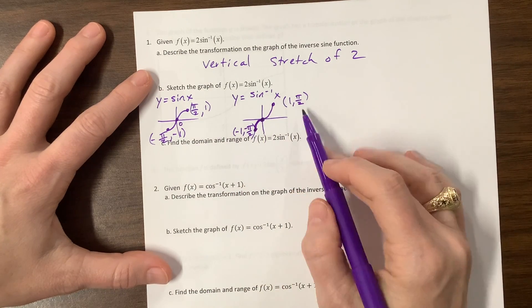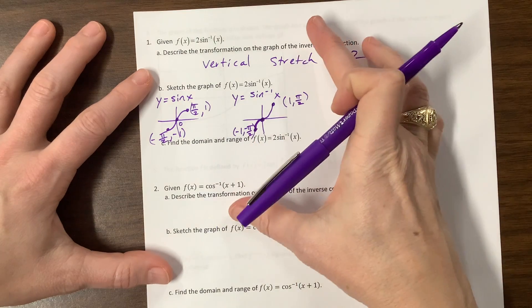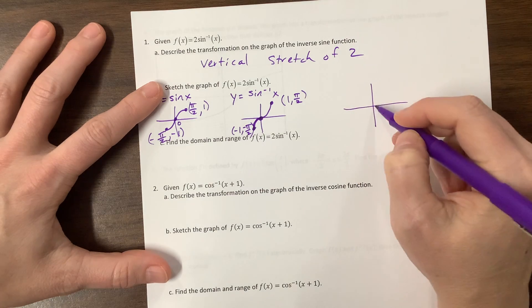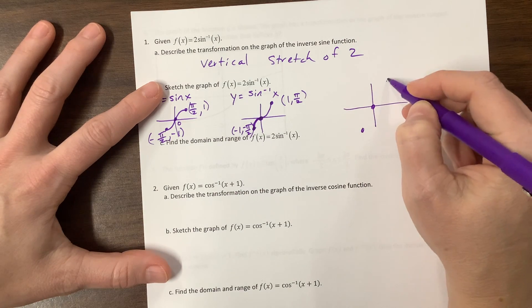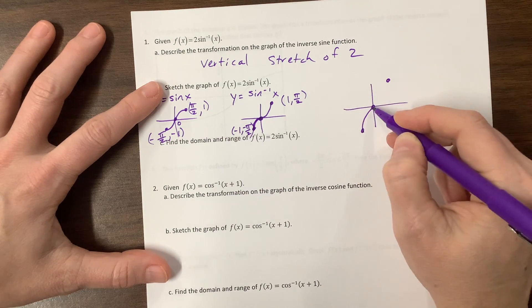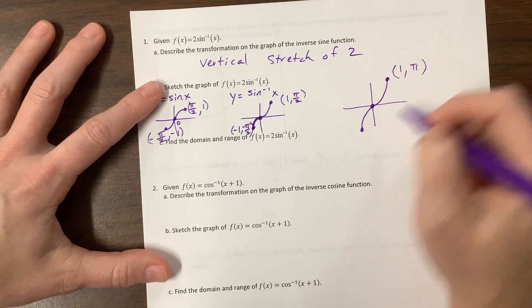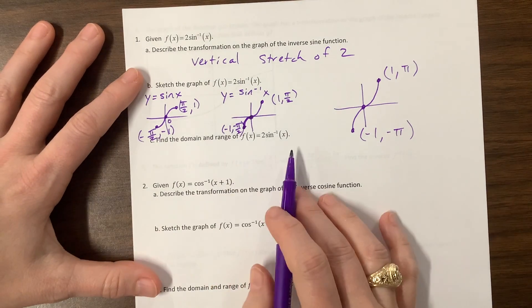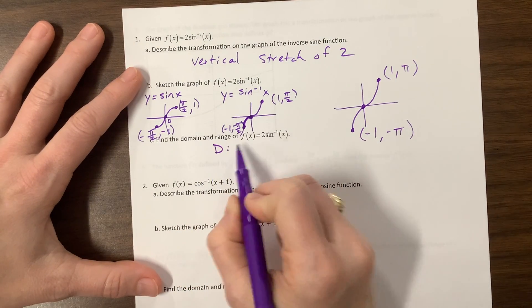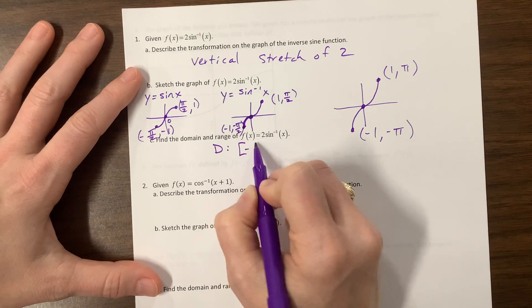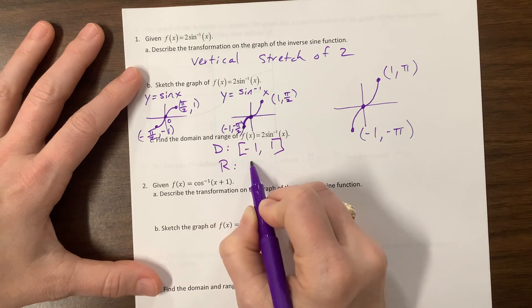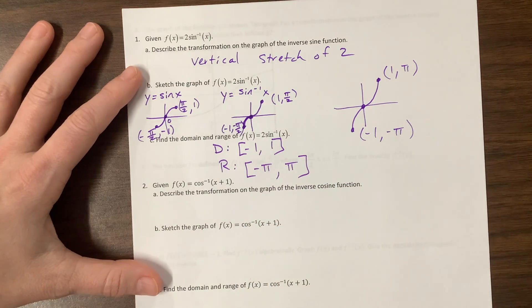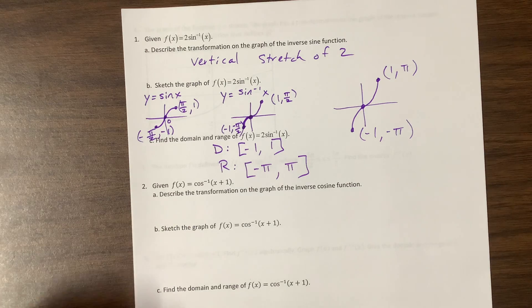Okay. So a stretch of 2 means that I have to pull, everything pulls away from the x-axis. So now instead of π over 2, we're at π. So, okay. Here, here, here. I would ask you to label. This is the point 1 comma π. This is negative 1 negative π. And there we go. Find the domain and range? Okay. Well, it's easy to see in my graph. The domain goes from negative 1 to 1. The range goes from negative π to π. Okay. That's probably long enough. We'll come back.